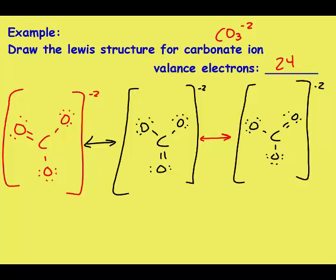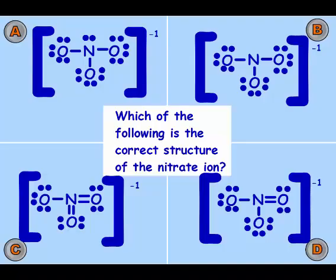So in this case you would need to draw all three of them because it says showing all resonance structures. So go ahead and pause the video and draw the Lewis structure for nitrate and then figure out which of these is the true structure. Restart when you have an answer.